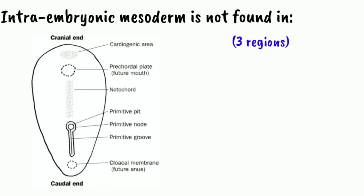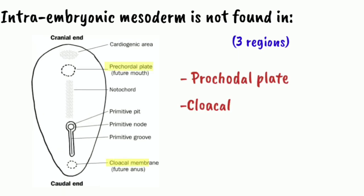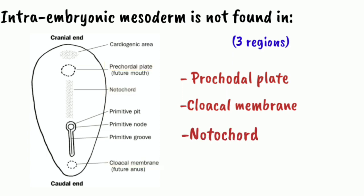The intraembryonic mesoderm spreads throughout the embryonic disc except in three regions. The regions in which the embryonic disc lacks mesoderm are the prochordal plate, the cloacal membrane, and the notochord.